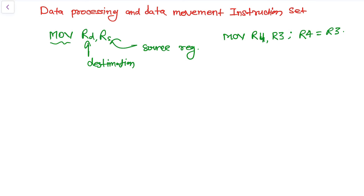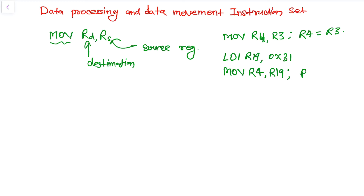We can understand MOV better with another example. Let's say we write LDI R19, 0x31 — loading the value 0x31 into R19. Note that LDI only works with registers R16 to R31. Then if we write MOV R4, R19, R4 will be loaded with 0x31. That's the MOV instruction.